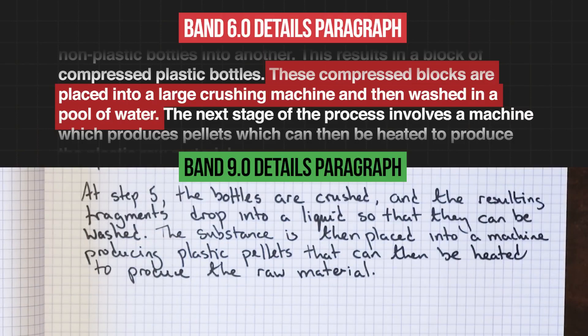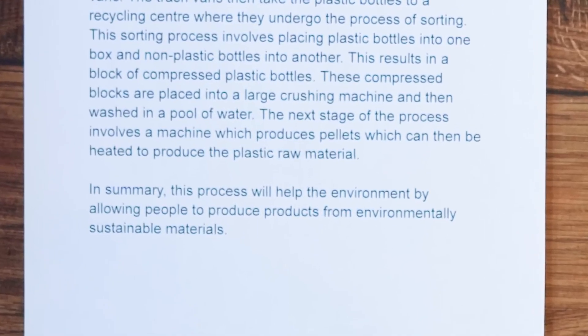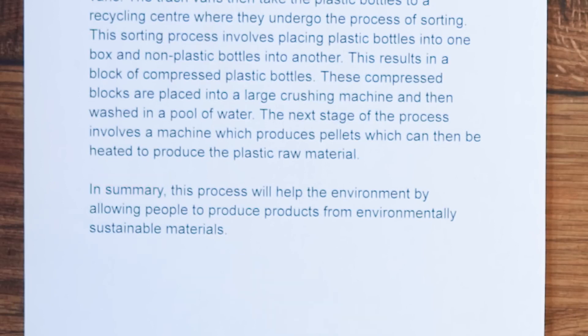The substance is then placed into a machine producing plastic pellets, heated to produce the raw material. And now the student has started a new paragraph with: 'In summary. This process will help the environment by allowing people to produce products from environmentally sustainable materials.' All sounds very nice — some good vocabulary — but it is completely wrong. A conclusion is your opinion, and your opinion has no place in this report because it is not asking for it. Why did the student do it? Their teacher, who is very inexperienced, got confused between task one reports and task two essays. Task two essays — yes, write a conclusion, summarize your opinion. Task one is very, very different.